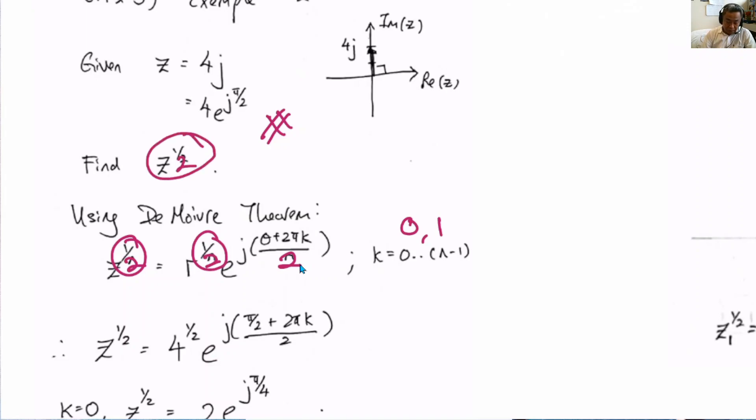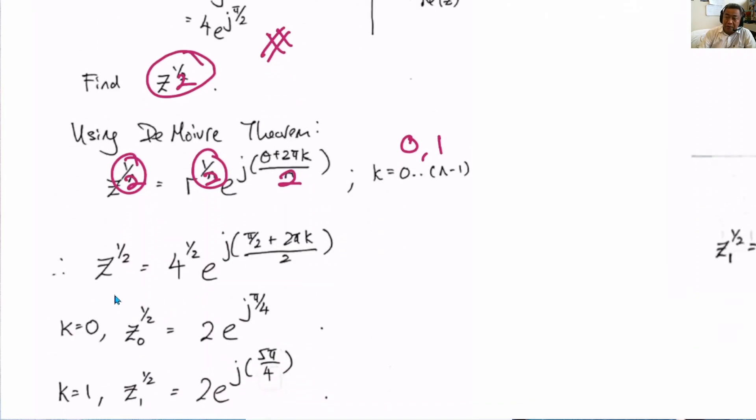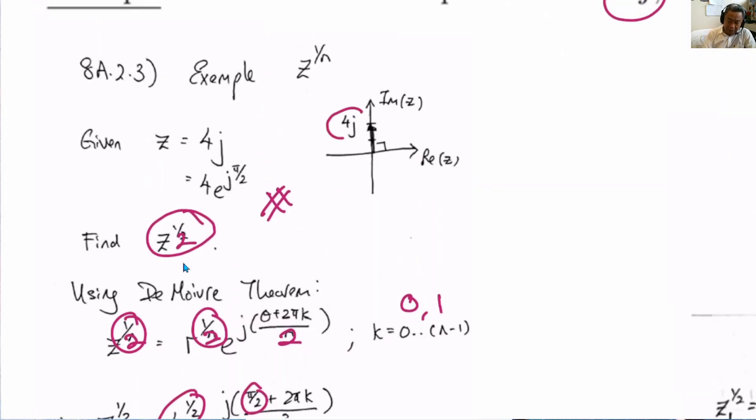So simply, the easiest way to solve this problem is to use the polar notation, substituting this value. 4 is the modulus of z, π/2 is the angle. So what we do is 4j, this is the angle, theta equals to π/2. Remember, we are always using our examples using radians and not degrees.